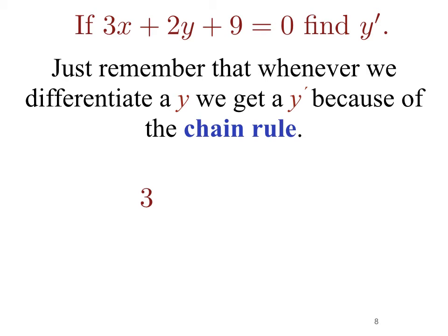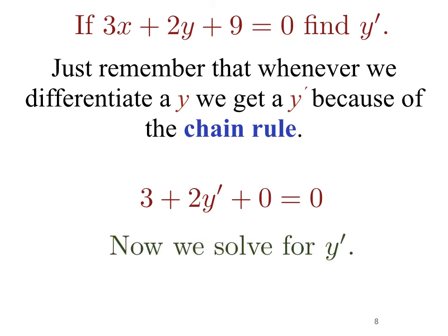Differentiating the second term we get 2 times y prime because the derivative of y is y prime. Differentiating 9 gives us 0, and that equals the derivative of 0 which is 0. Now to finish up we need to solve for y prime. We'll subtract 3 from both sides and then divide by 2, so we get that y prime is minus 3 halves.